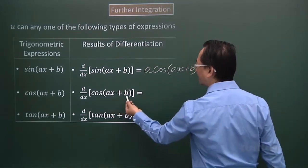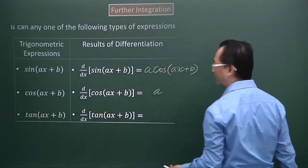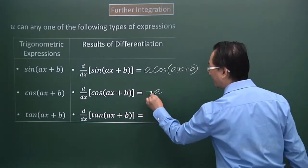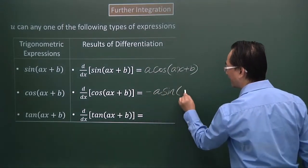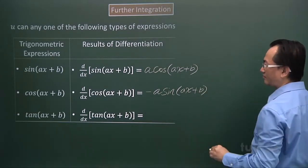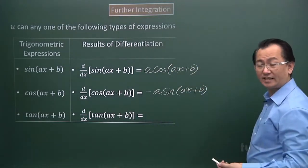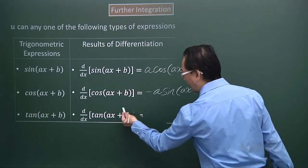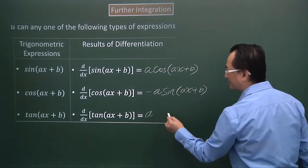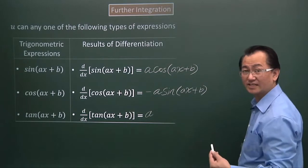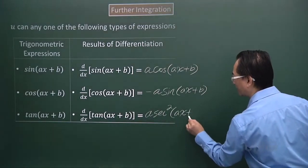Next, differentiating cos(ax + b): differentiating the angle expression gives a, and differentiating cosine gives negative sine, so the result is −a·sin(ax + b). For tangent(ax + b), I focus on the angle part first — differentiating gives a — and differentiating tangent with respect to x gives sec squared. So the result is a·sec²(ax + b).